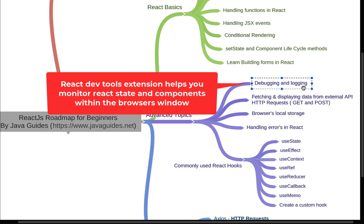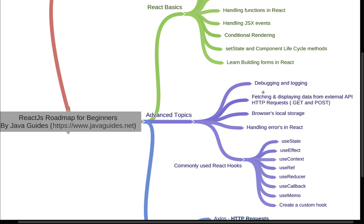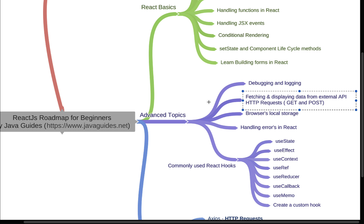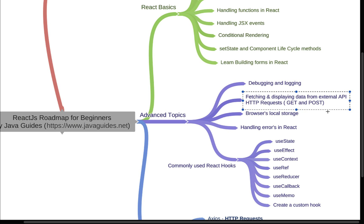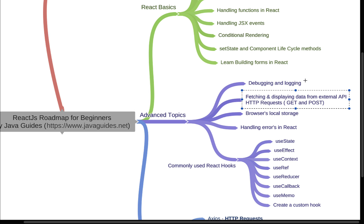There is a browser extension called React Dev Tools that you can use to monitor React state and components within the browser window itself — use it to debug your React application. Next, learn how to make AJAX calls or REST API calls in React. You can use the JavaScript built-in Fetch API to make HTTP GET and POST requests, consume REST APIs, and populate the API response data in React components.